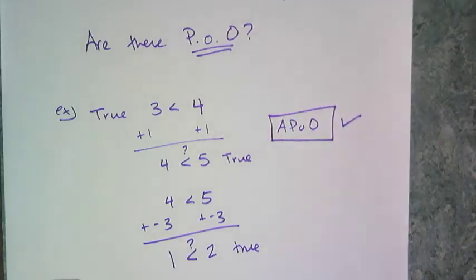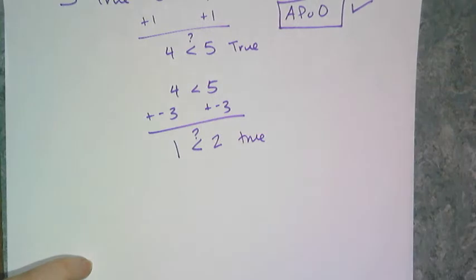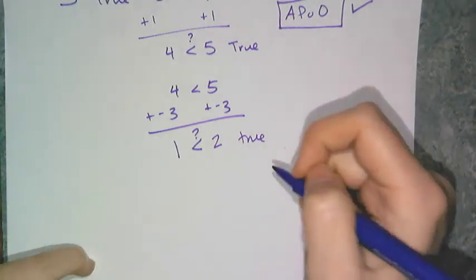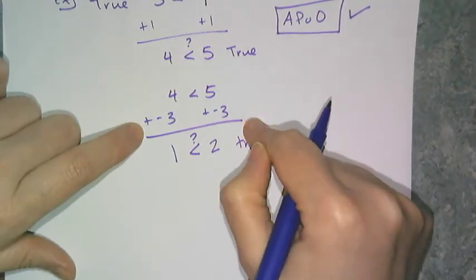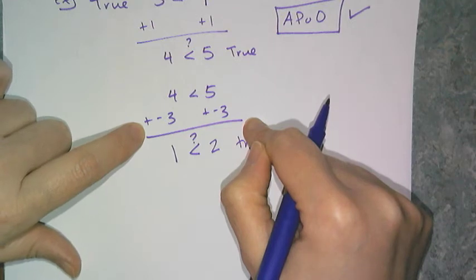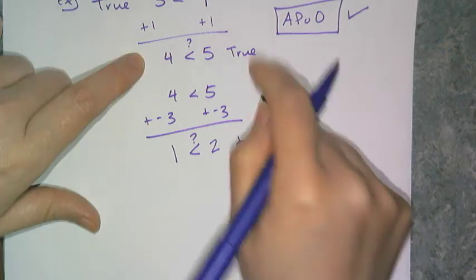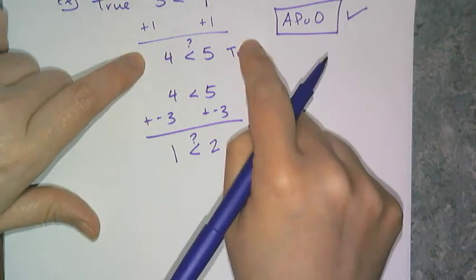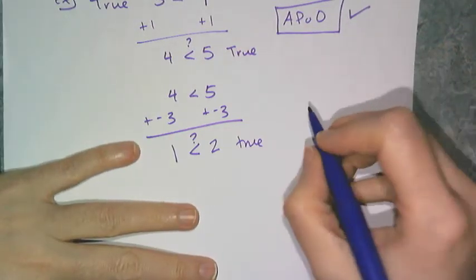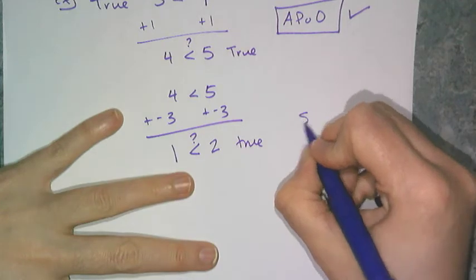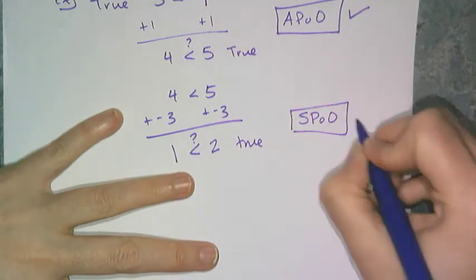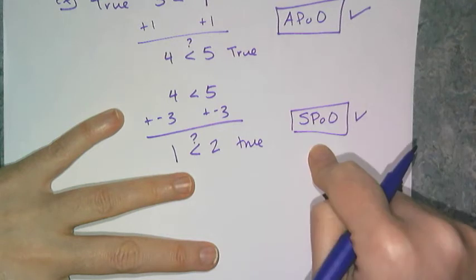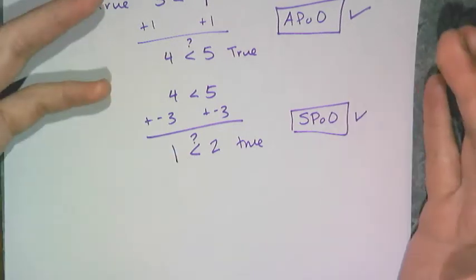If we remember how subtraction works, subtraction is defined as adding the opposite. So adding a positive is the same as subtracting a negative, and adding a negative is the same as subtracting a positive. That means I also have the subtraction property of order — SPOO also works. So I have both APO and SPOO.